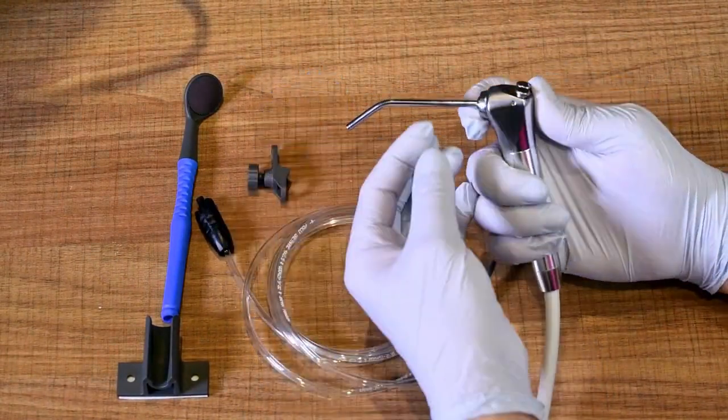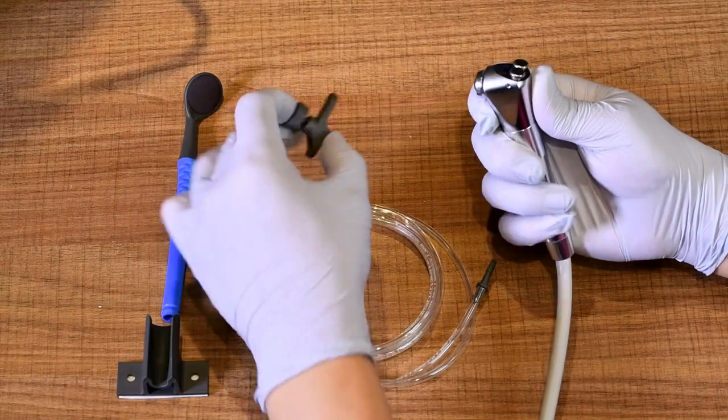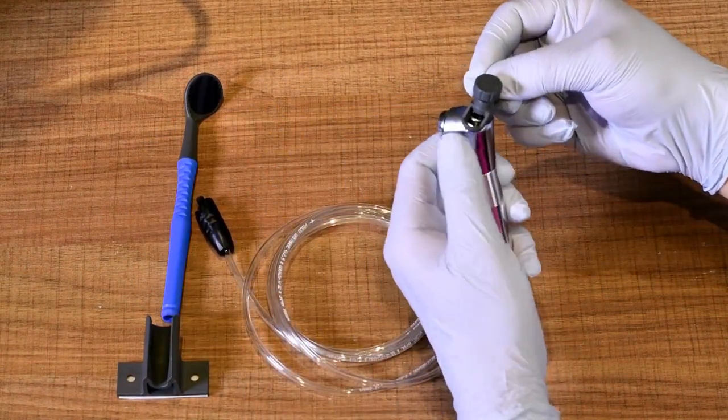First, we will show the air water syringe hookup. You clip the gray dial onto the air water. That dial will allow you to adjust the airflow.